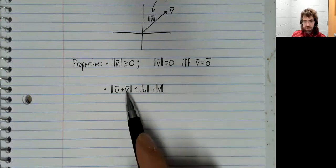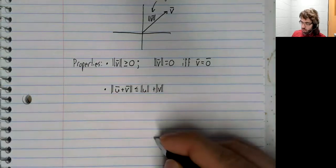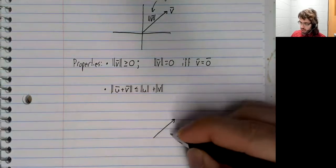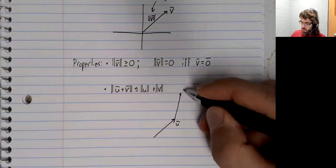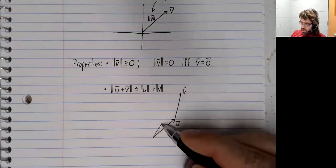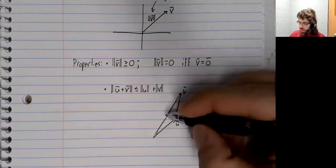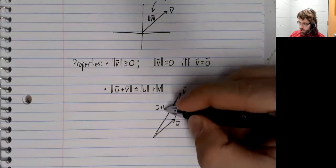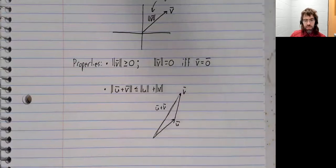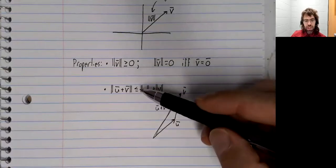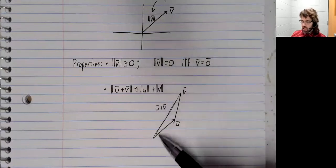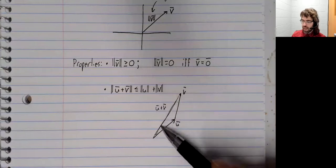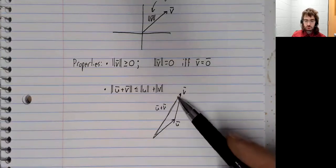u plus v is found by taking the vector u and the vector v and putting them tip to tail. The parallelogram rule is therefore, sorry, this rule here is therefore the geometric result that the third side of a triangle is always shorter than the combined lengths of the other two sides.